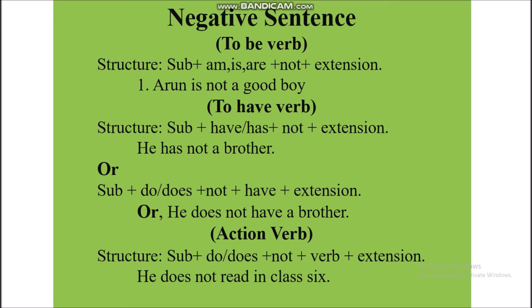Negative sentence. To be verb structure: Subject plus am, is, or are, plus not, plus extension. Example: Arun is not a good boy. To have verb structure: Subject plus have or has, plus not, plus extension — He has not a brother. Or: Subject plus do or does, plus not, plus have, plus extension — He does not have a brother.